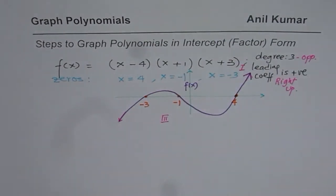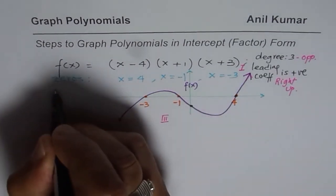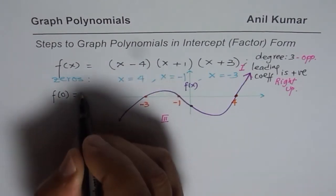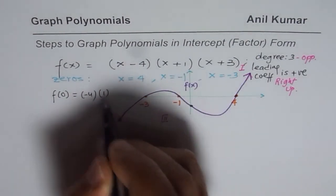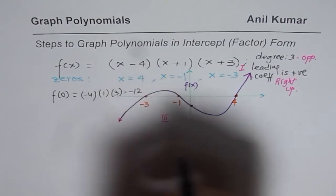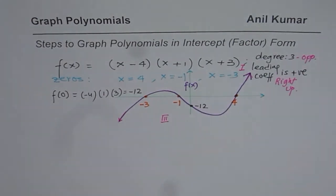Now we can, for accuracy, find what y-intercept is. That is f of 0. So if I substitute 0 here, I get minus 4 times plus 1 times plus 3, right? So that is minus 12. So this point is minus 12 for us. Now this graph may not look so accurate, but it will fetch you full marks. It has all the right things in it and that is how you can actually sketch polynomial in your test papers.